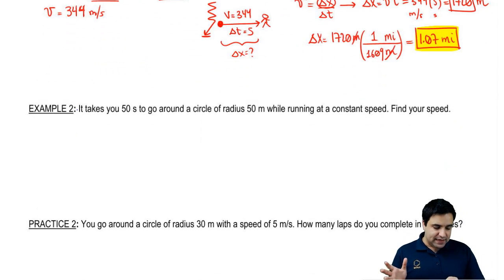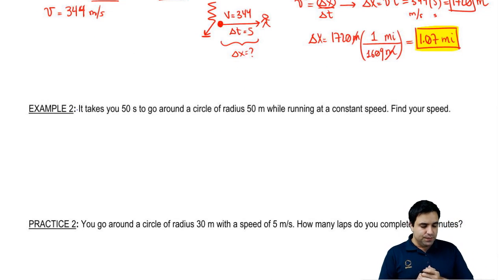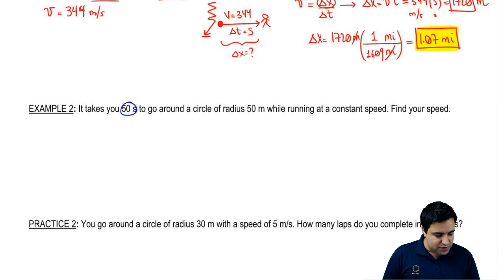All right, so hopefully you got that right. I'm going to jump into example two. It takes you 50 seconds to go around a circle of radius 50 while running at a constant speed. Constant speed means I'm going to be able to use this equation here.